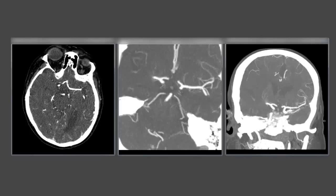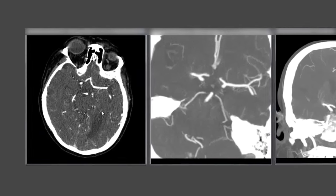In this video we're going to look at some other examples of MCA large artery occlusions. We have our source images and then our axial thick MIPs, which are slightly off the axial plane in this particular example, and then a nice coronal thick MIPs reconstruction.